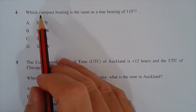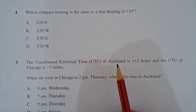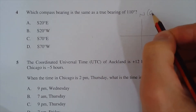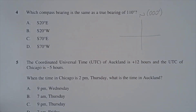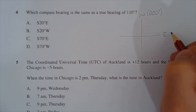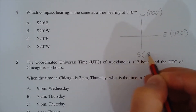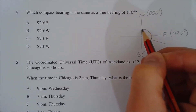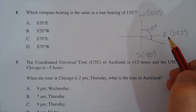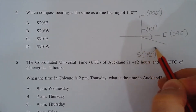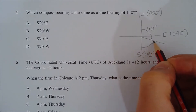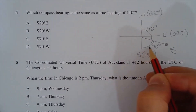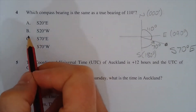Question 4: which compass bearing is the same as a true bearing of 110 degrees? Drawing a compass rose, 110° is just south of east (east is 090°). Measuring back from south towards east: 180 − 110 = 70 degrees, so the bearing is S70°E. The answer is C.